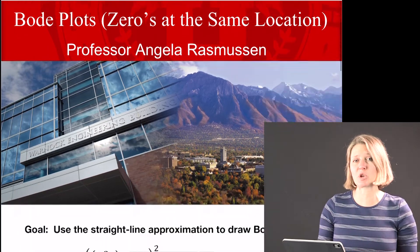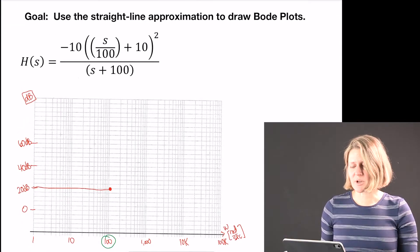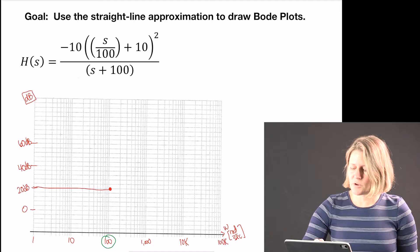So in this example we're going to look at two zeros at the same location. Here's our equation. We want to first get this into standard form.